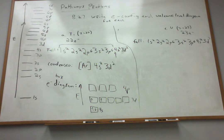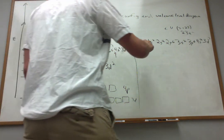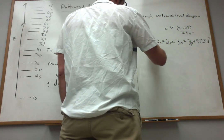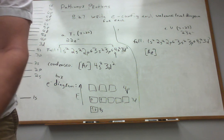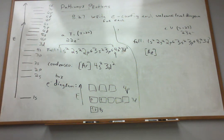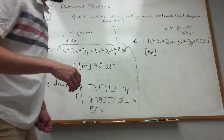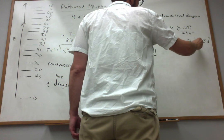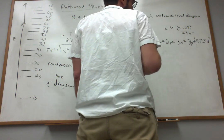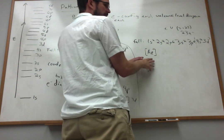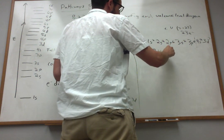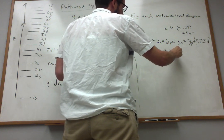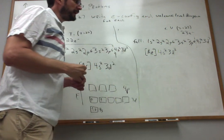For the condensed or abbreviated configuration, I look for the previous noble gas, which is argon — element number 18. The breakpoint occurs wherever we have something p6. Everything to the left of that line is isoelectronic with argon, and then I simply write [Ar] 4s2 3d3. That's the abbreviated configuration, essentially equivalent to the full one written above.